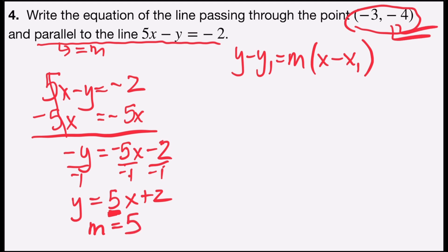So now I have the point (-3, -4) and a slope of 5. Let's substitute: y minus the y-coordinate is -4 equals the slope is 5 times x minus the x-coordinate is -3.